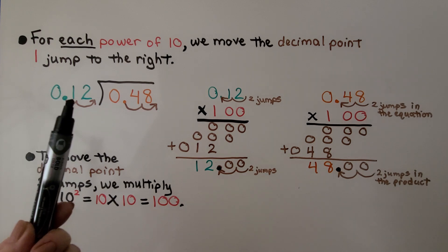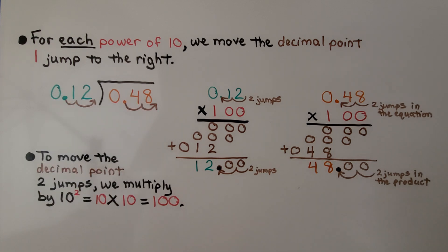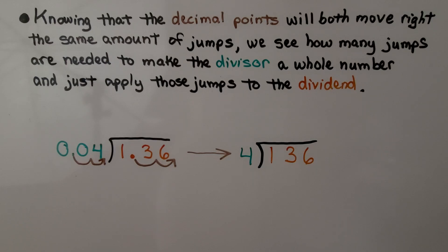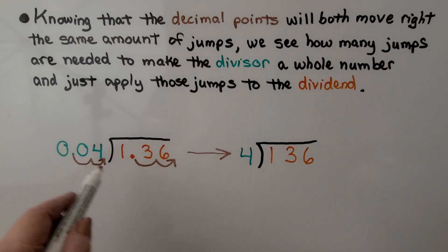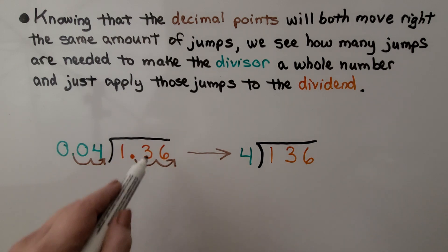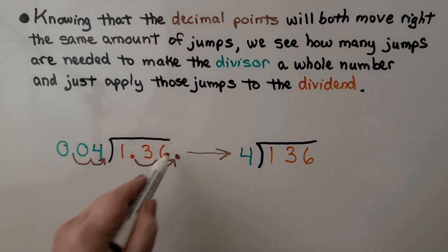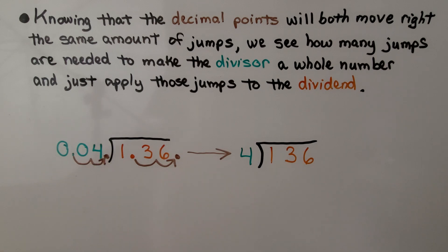Now we have 12 going into 48 — we have 48 divided by 12. Knowing that the decimal points will both move right the same amount of jumps, we see how many jumps are needed to make the divisor a whole number, and just apply those jumps to the dividend. We need two jumps, so we're going to go two jumps, and that's where both decimal points land.